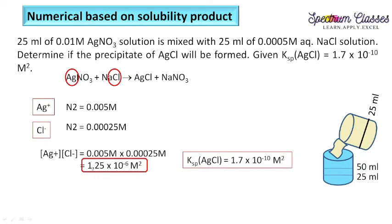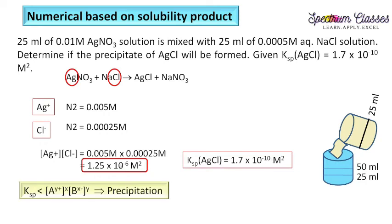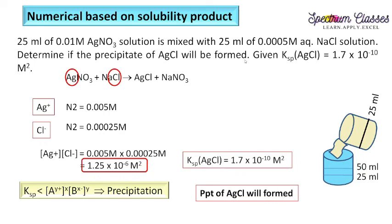The Ksp for AgCl is 1.7 × 10⁻¹⁰ mol²/L². The calculated ionic product is 1.25 × 10⁻⁶ mol²/L². Since 10⁻⁶ is greater than 10⁻¹⁰, the ionic product is higher than Ksp, meaning precipitation occurs. Yes, a precipitate of silver chloride will form in this solution. This is how we determine whether precipitation occurs — a very important concept.